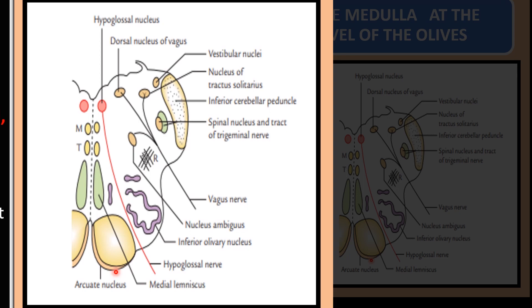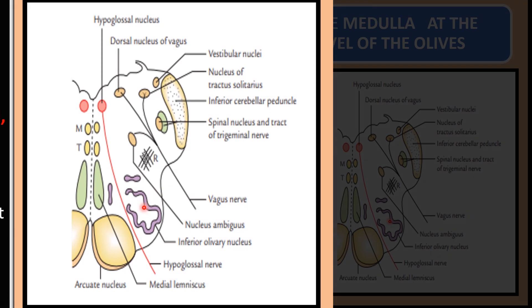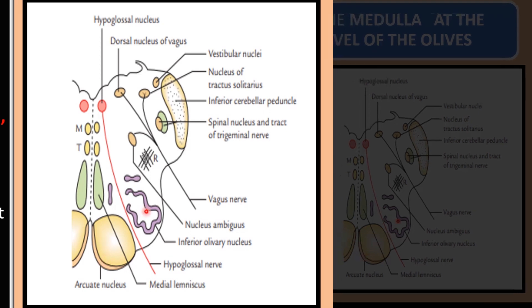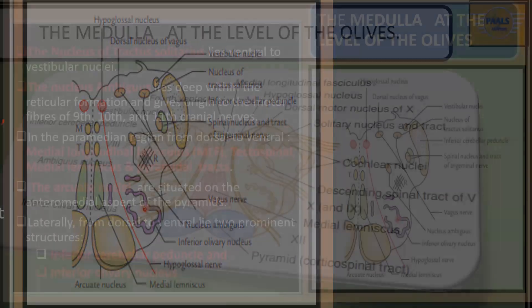Moving laterally, we see two structures of interest. The first is the inferior cerebellar peduncle, and the other is the inferior olivary nucleus — one of the swellings seen on the anterior surface of the medulla after the pyramid. This is the nuclei of the olive.